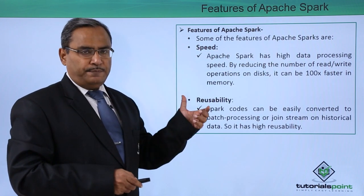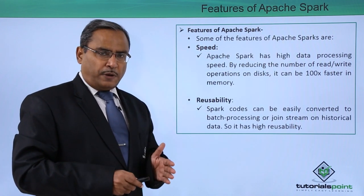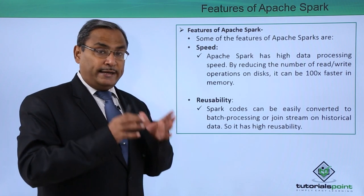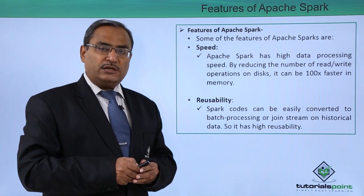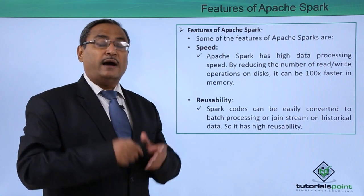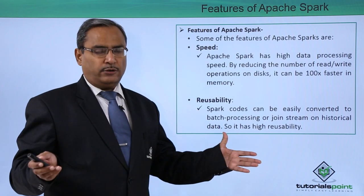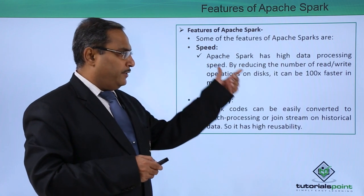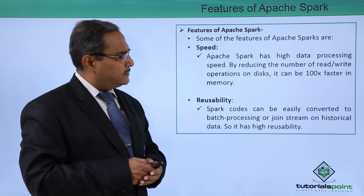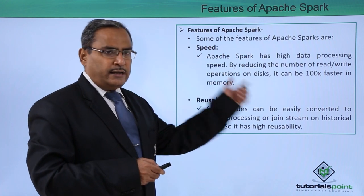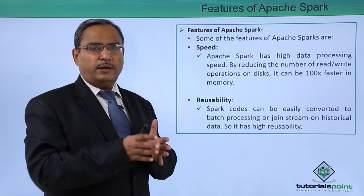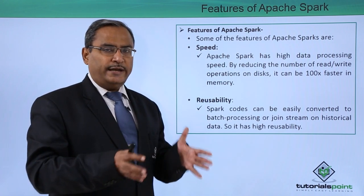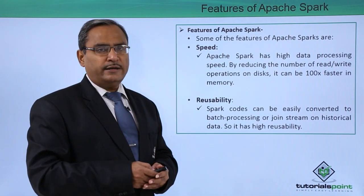First, we are starting with speed. Spark is a lightning-fast cluster computing technology and it supports in-memory computation. That is why its computation is 100 times faster than other technologies available. Apache Spark has high data processing speed by reducing the number of read-write operations on disks, so the computations are done in memory and that is why it is 100 times faster.